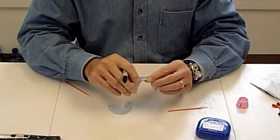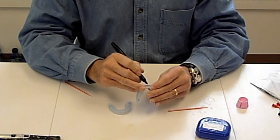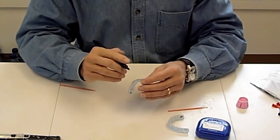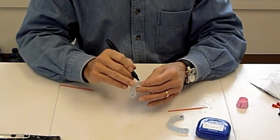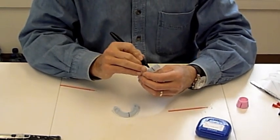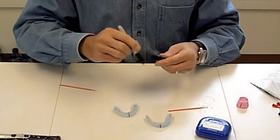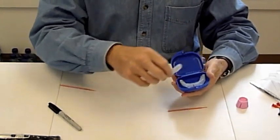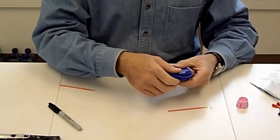We're going to mark the midlines of each tray so that it makes it much simpler for us to seat the tray in the mouth correctly. We've got our midlines marked, and then we're going to take our trays.